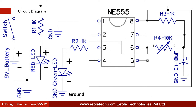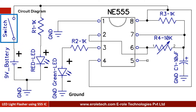Before making the project, we will understand its circuit diagram. This is a 9 volt battery to power up the circuit. This is an on-off switch which is used to start or stop the project. This is a power supply indication LED. This is a current limiting resistor to protect the LED from high current and voltage.